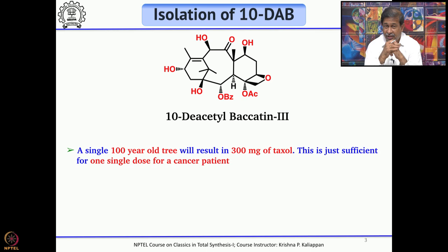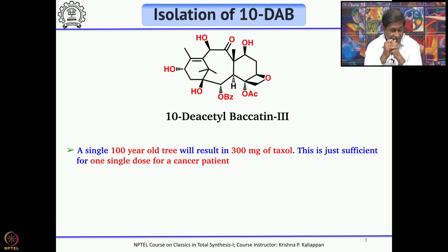If you want to produce more Taxol, there should be other ways — it cannot come solely from natural sources. Nature has shown the way: here is the molecule, it can be used for the treatment of ovarian and breast cancer, now make your own. That was the biggest challenge nature has given.